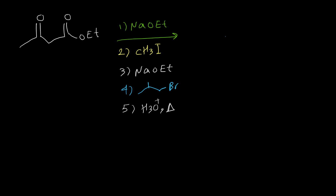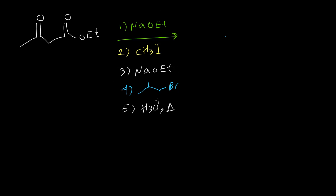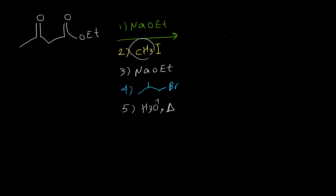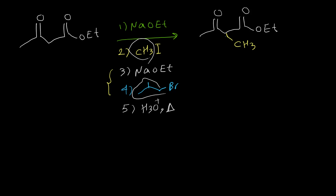Here is the second example. As you can see, we use the base two times — in step one and in step three — and we use two different alkyl halides in step two and in step four. We can take a look at the first two steps: the result is an SN2 reaction, and this methyl group goes to the alpha carbon. So I draw the structure for acetoacetic ester and put a CH3 here. By performing step three and step four, we have the same process again — the second hydrogen is removed by base, and then this alkyl halide isobutyl attaches to the alpha carbon as well.